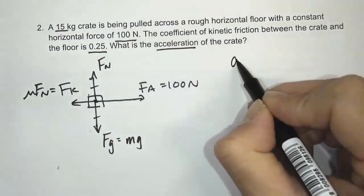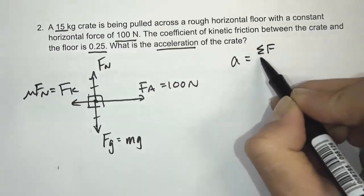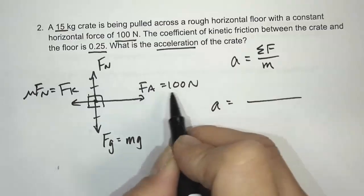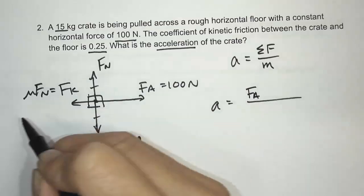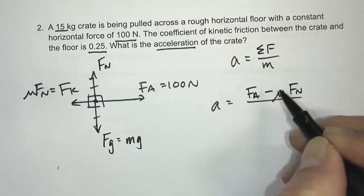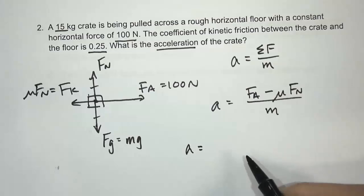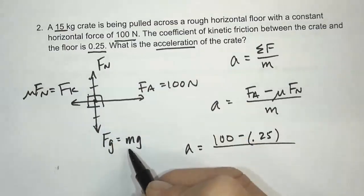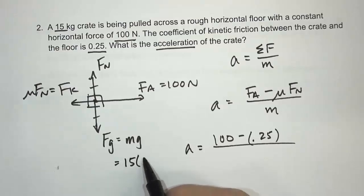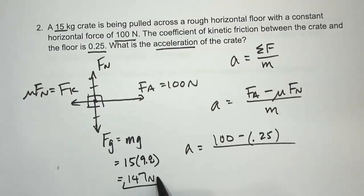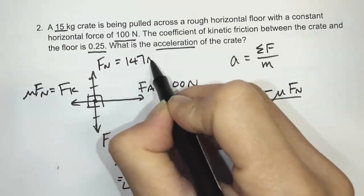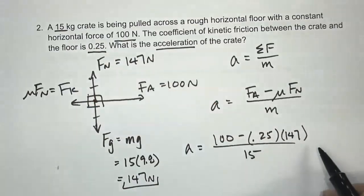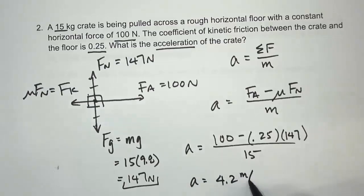We're looking for acceleration, so I'll write: acceleration equals net force divided by mass. The net force is the force in the positive direction minus the force in the negative direction — so force to the right minus kinetic friction, which is mu times Fn, all divided by mass. Substituting: Fa is 100, mu is 0.25. Fn equals Fg: 15 times 9.8 gives 147 newtons. So the normal force is 147 newtons. The mass is 15 kilograms. Calculating that gives 4.2 meters per second squared.